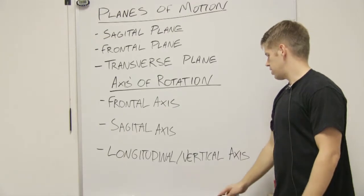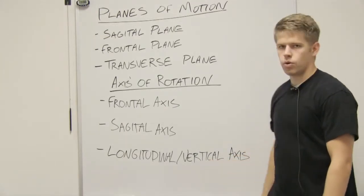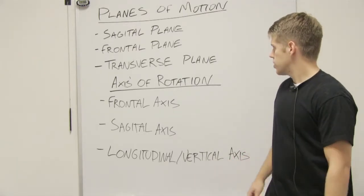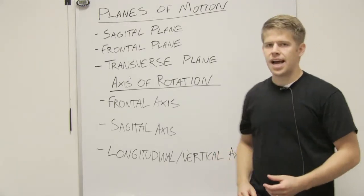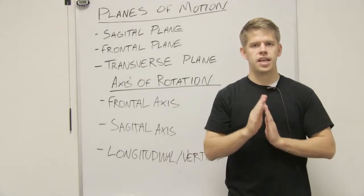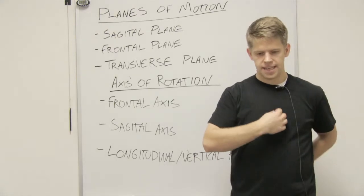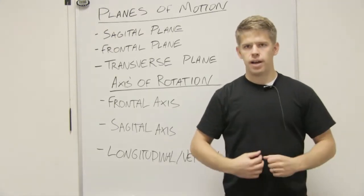And last but not least is the longitudinal or vertical axis, both meaning the same thing. So the longitudinal axis is actually the intersection of the frontal plane and the sagittal plane. So it would lie in the center of my body. And when I rotate, that motion occurs—